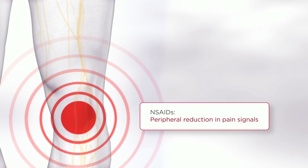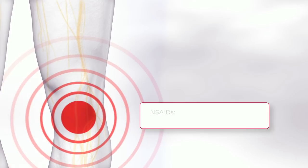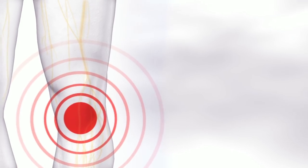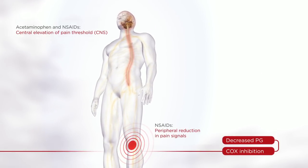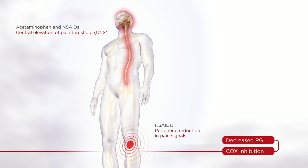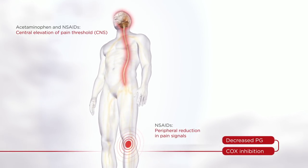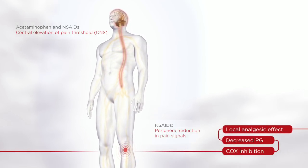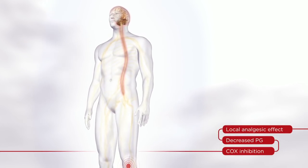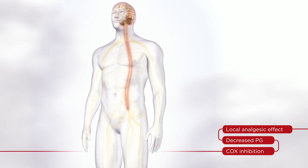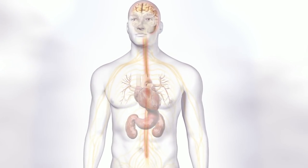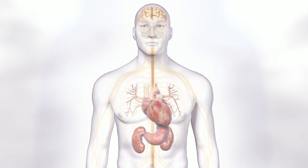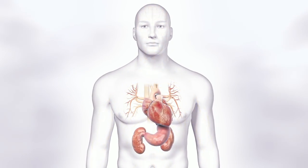At peripheral locations, NSAIDs also inhibit cyclooxygenase and reduce prostaglandin production. These peripheral actions account for their local analgesic effects, as well as for some of the unintended health consequences NSAIDs can potentially cause in the heart, stomach, and kidneys.